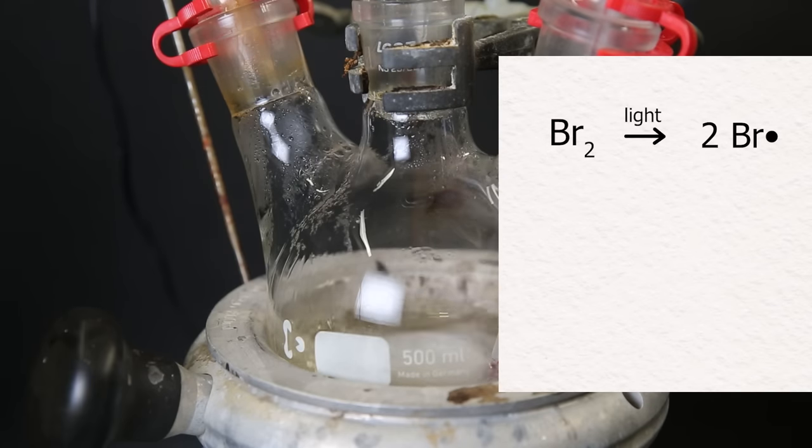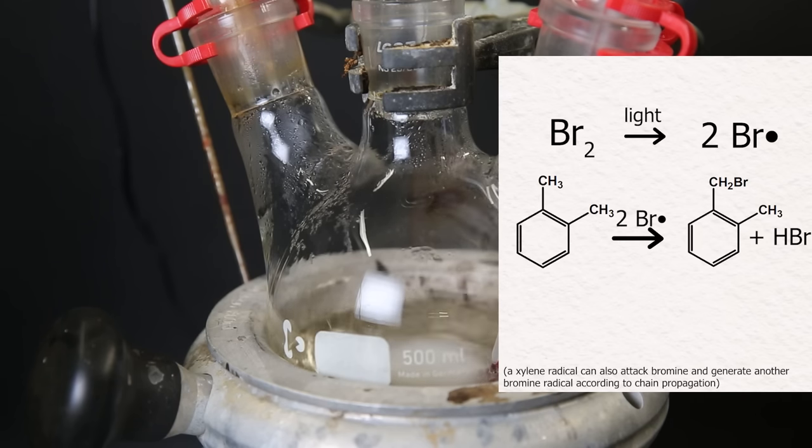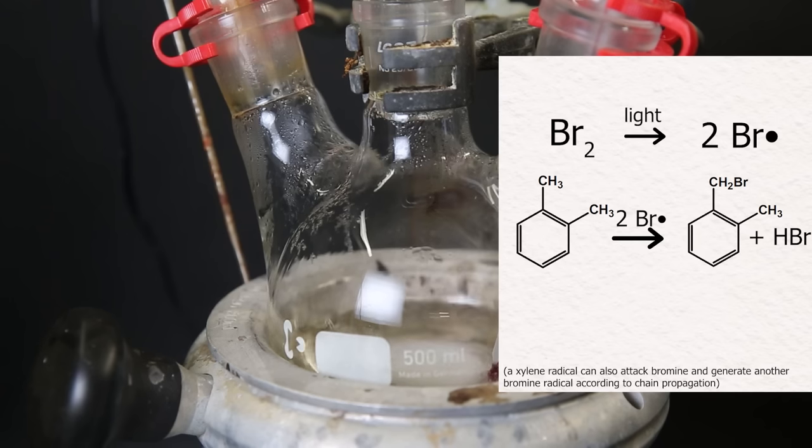So what will happen is the light will assist in producing bromine radicals. When hit by a photon, bromine will fall apart and produce two radicals. These radicals can steal a hydrogen atom from the xylene methyl groups, which in turn allows for another bromine radical to attach itself there. This produces a monobrominated xylene and hydrobromic acid. This process then repeats itself on the other methyl group to produce the dibromide.